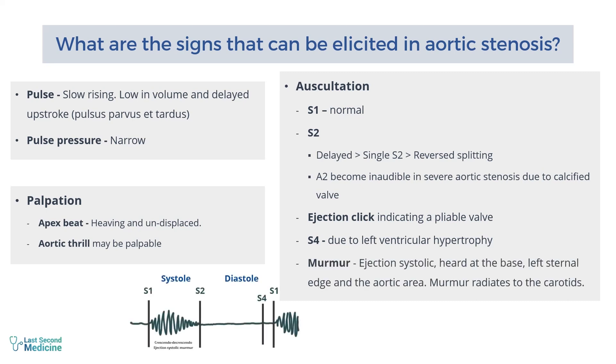The murmur in aortic stenosis is an ejection systolic murmur. It is heard at the base, left sternal edge, and the aortic area. The murmur radiates to the carotids.